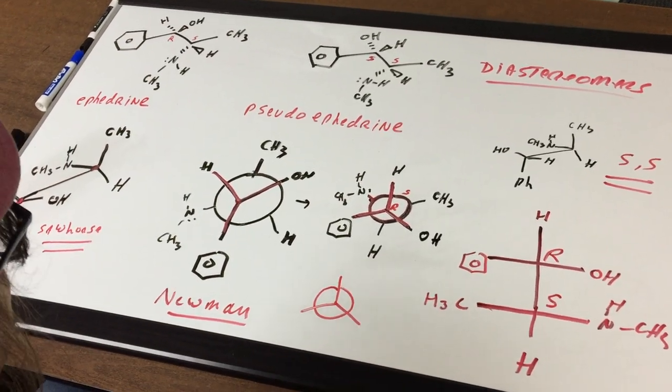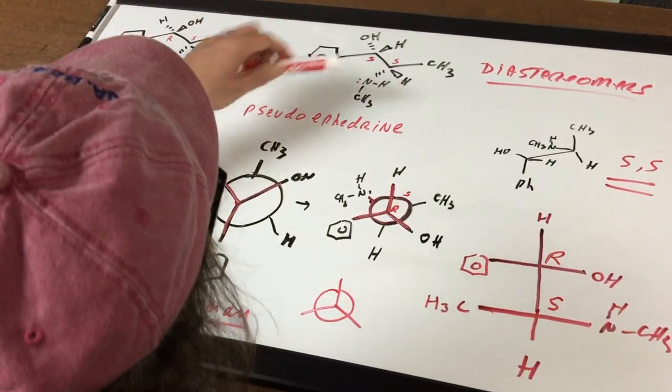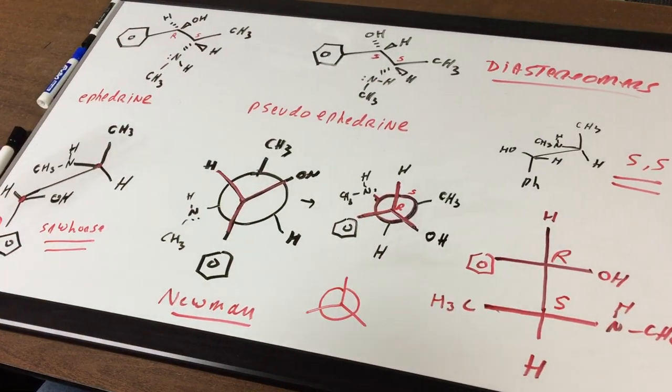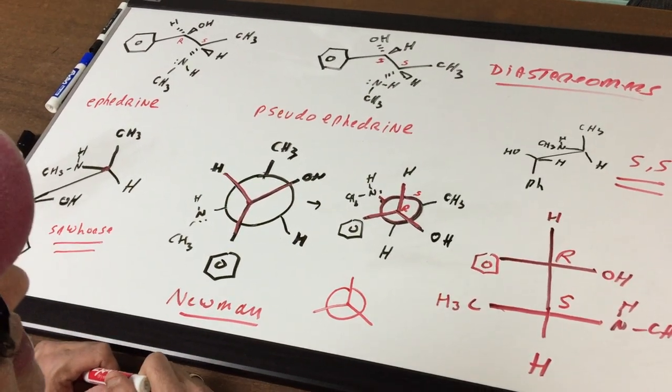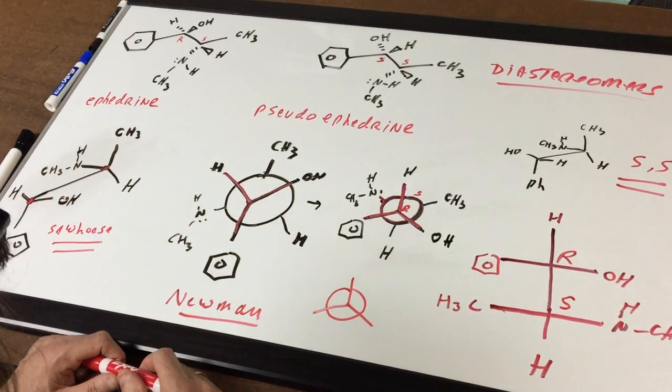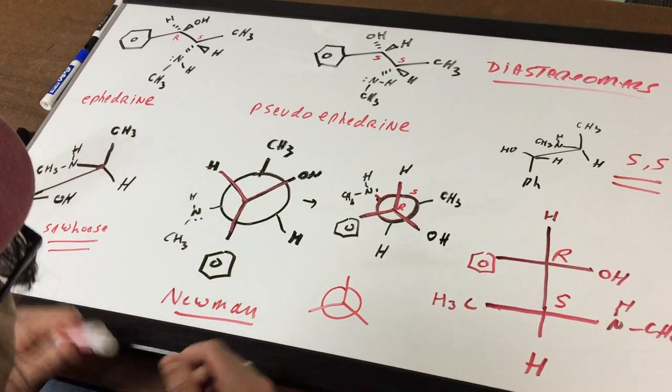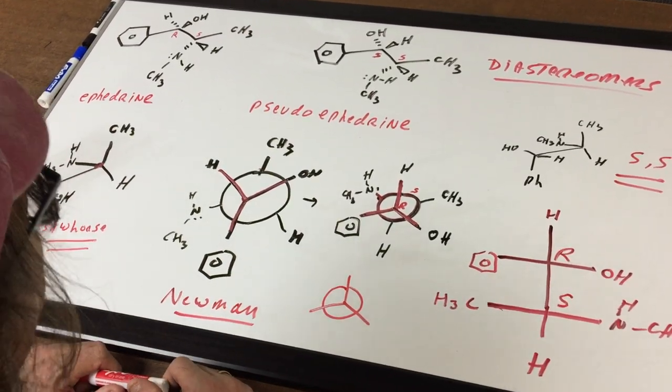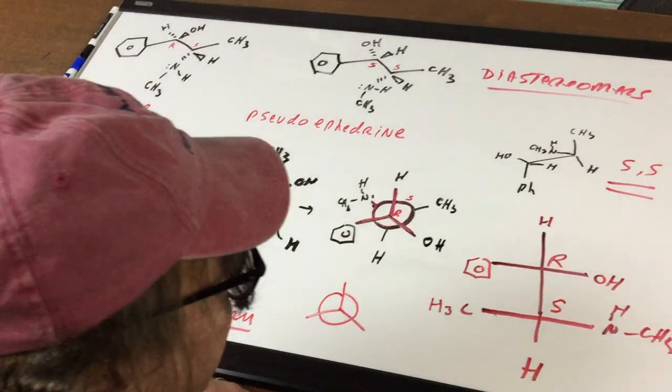For the DAT exam, you just make sure you can do R and S. And you can understand if you were given two problems like this. Or two examples. And I said, what's their relationship? And you would tell me they are diastereomers. I do have a problem involving Newman's into Fisher on the DAT destroyer. So take a look at that. If you got any questions, I'll see you in study group on my Facebook page. All right. Good day to you.